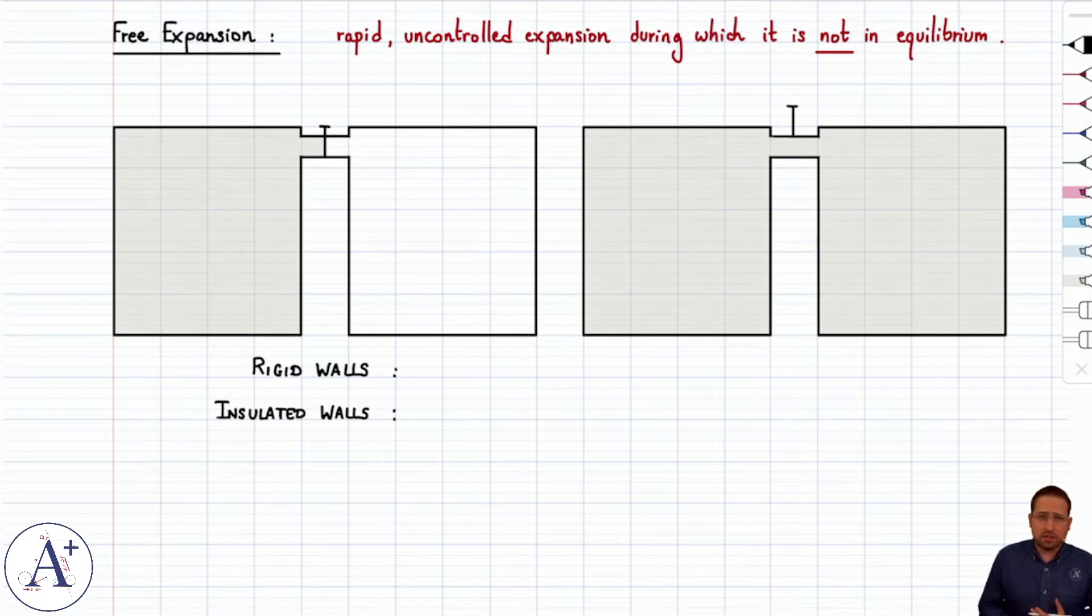Free expansion is an irreversible transformation, and that comes from the fact that it's not even a quasi-static transformation to begin with, because during this expansion, the gas is not in equilibrium. It's a rapid, uncontrolled expansion as we open the valve between the two containers here and let the ideal gas that's in the left container flow into the container on the right, which is empty, and then we leave the valve open so that eventually it reaches equilibrium.